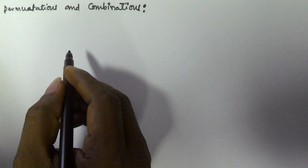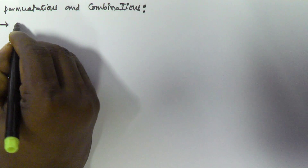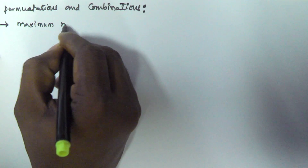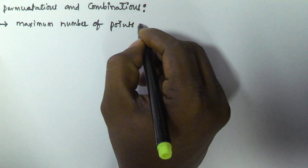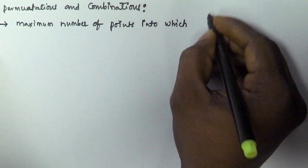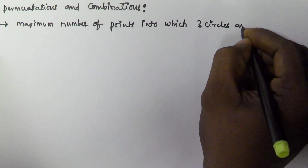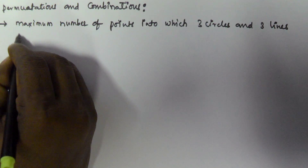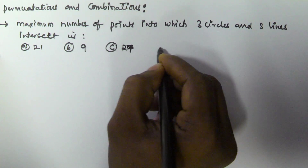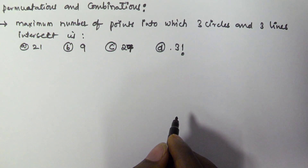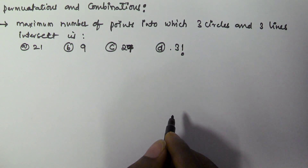Hello friends, in this video we will see another problem related to permutations and combinations. The problem is: the maximum number of points into which three circles and three lines intersect each other. The options are: A is 21, B is 9, C is 27, and D is 3 factorial.